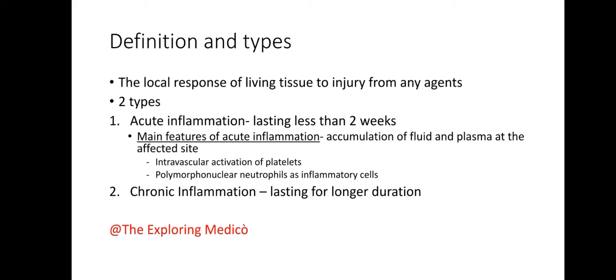There are two types of inflammation: acute inflammation and chronic inflammation. Acute inflammation lasts less than two weeks. The main features of acute inflammation include accumulation of fluid and plasma at the affected site, intravascular activation of platelets, and polymorphonuclear neutrophils as inflammatory cells.